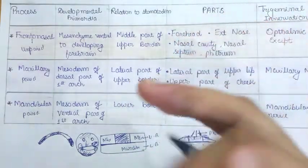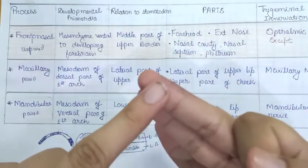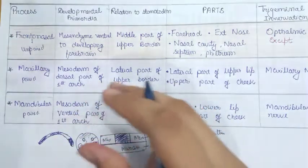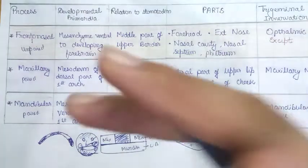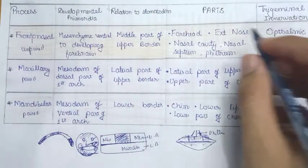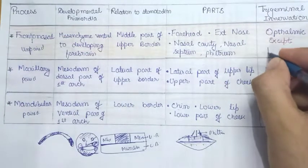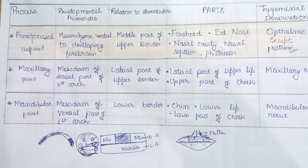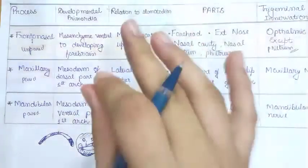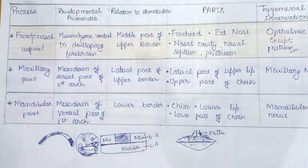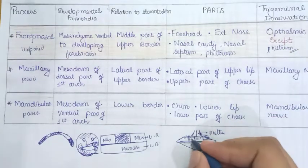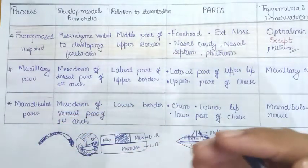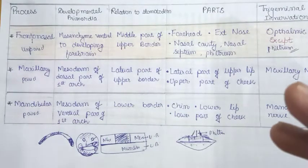The trigeminal nerve — the fifth cranial nerve — has three divisions: ophthalmic, maxillary, and mandibular. The ophthalmic division supplies the frontonasal process region except the philtrum. This is a commonly asked exam question: which structure formed by the frontonasal process is supplied by the maxillary nerve? The answer is the philtrum, or the central part of the upper lip. The rest of the maxillary process is innervated by the maxillary nerve, and the mandibular process is innervated by the mandibular nerve, which is V3 — the third division of the trigeminal nerve.